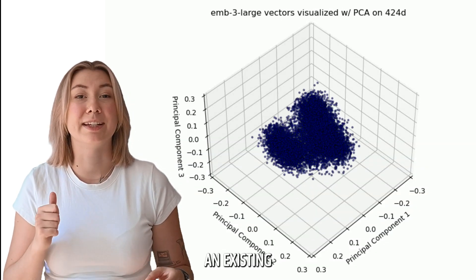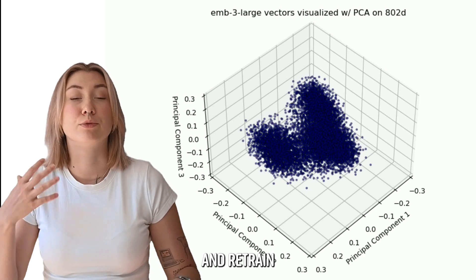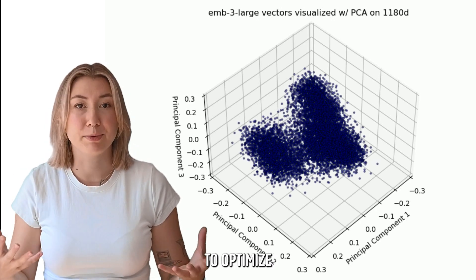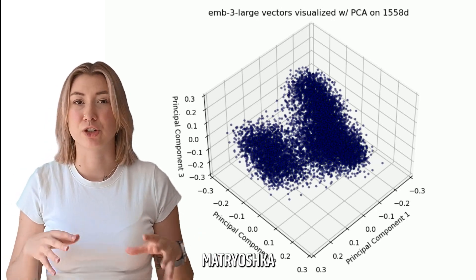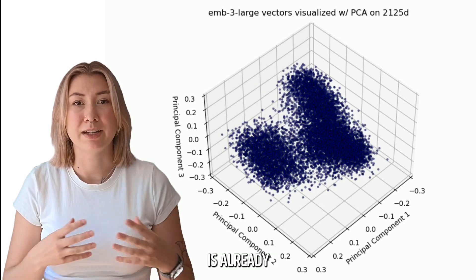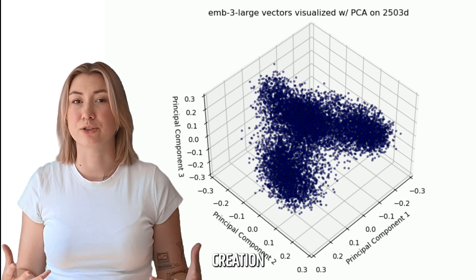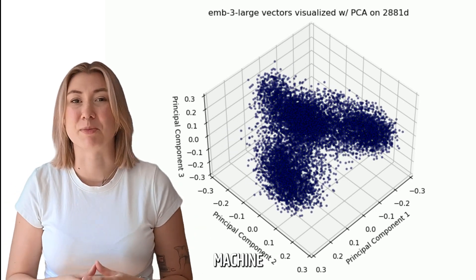In most compression techniques, you need to take an existing set of embeddings and retrain a model or function to optimize them. The nice thing about matrioshka representation learning is that optimization is already part of the initial embedding creation process, taking out one step from your machine learning pipeline.